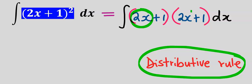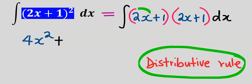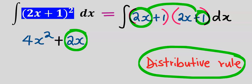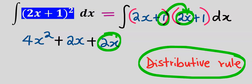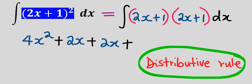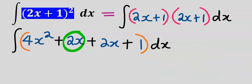Next, by using the distributive rule we are going to expand this bracket. 2x multiplied by 2x gives 4x squared. Next, 2x will multiply 1 and you have 2x; next 1 will multiply 2x and you have 2x. Next, 1 multiplied by 1 gives 1. So next we have 2x plus 2x.